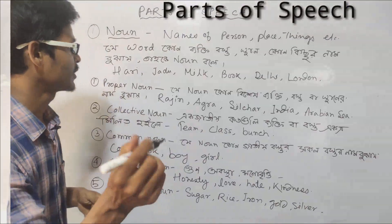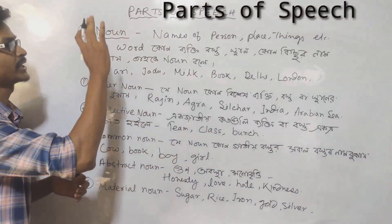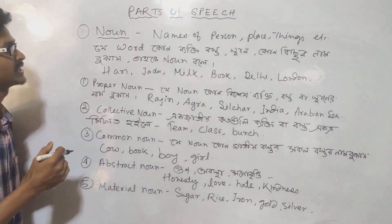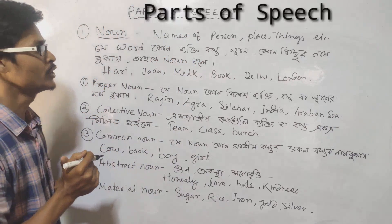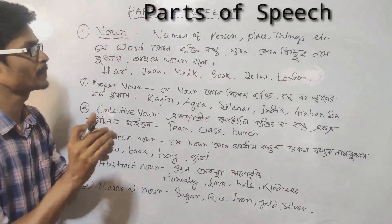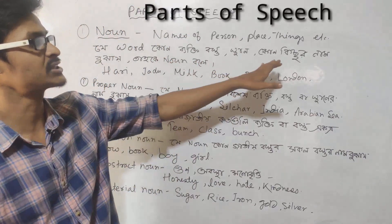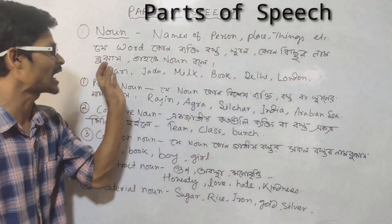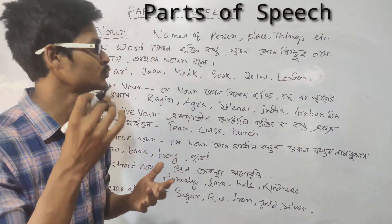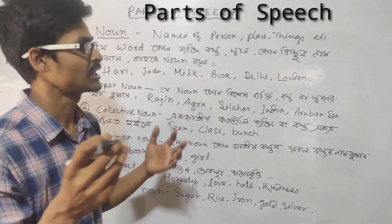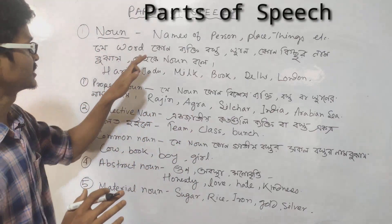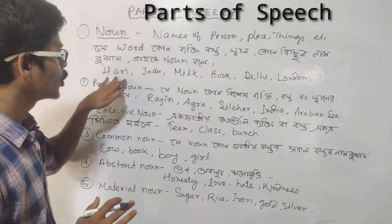Now let's look at the noun. What is a noun? A noun is the name of a person, place, thing, etc. Any word that is the name of a person, object, or place is called a noun.